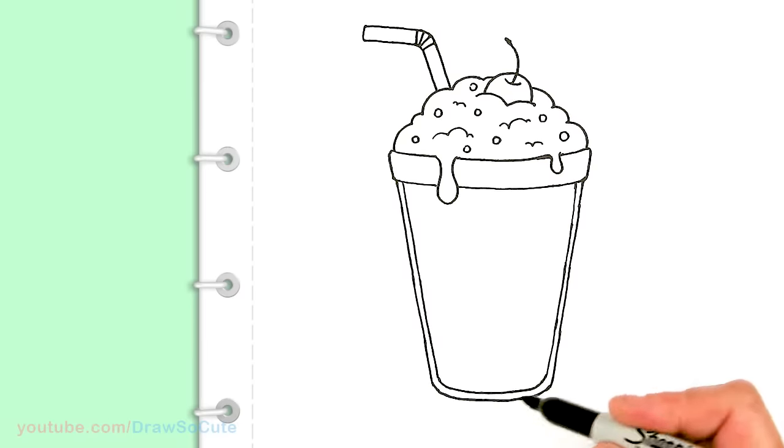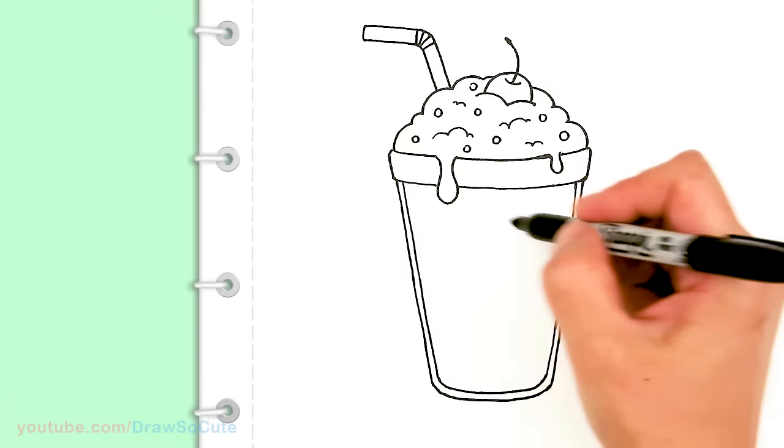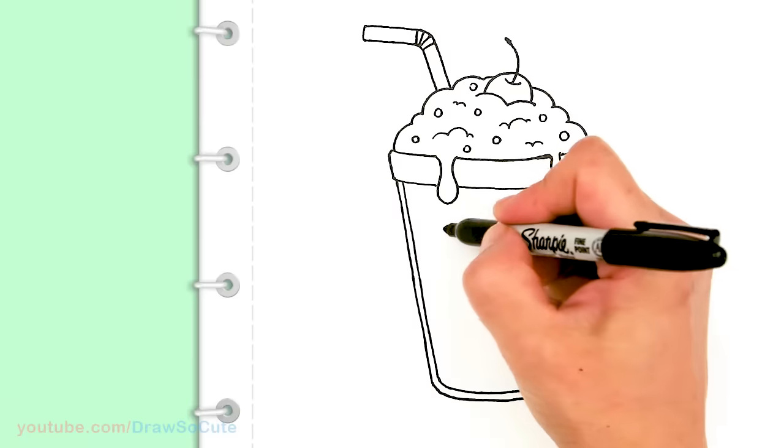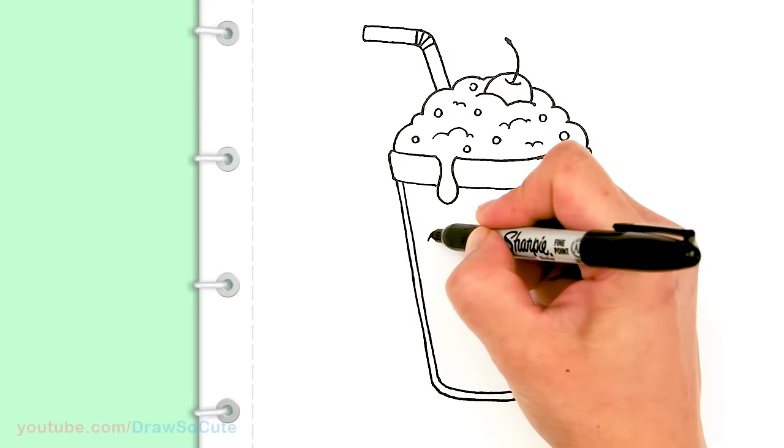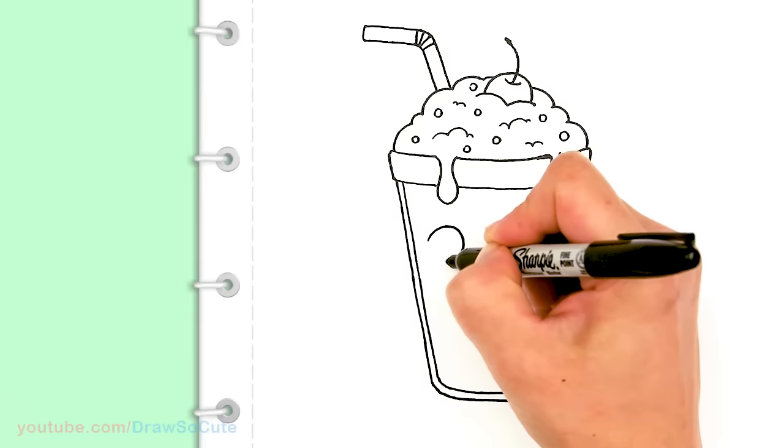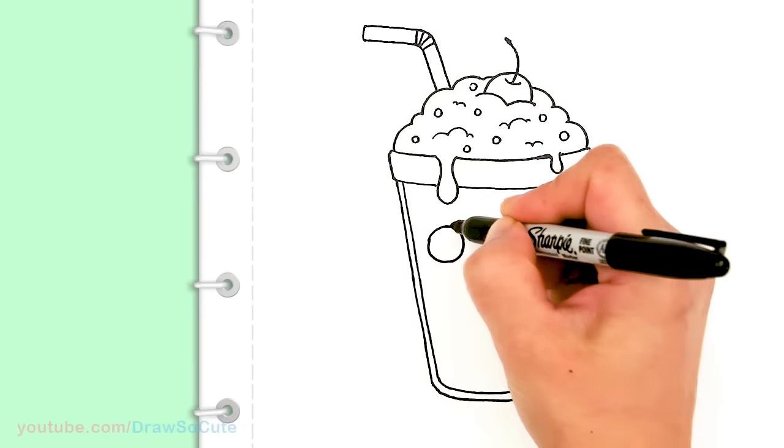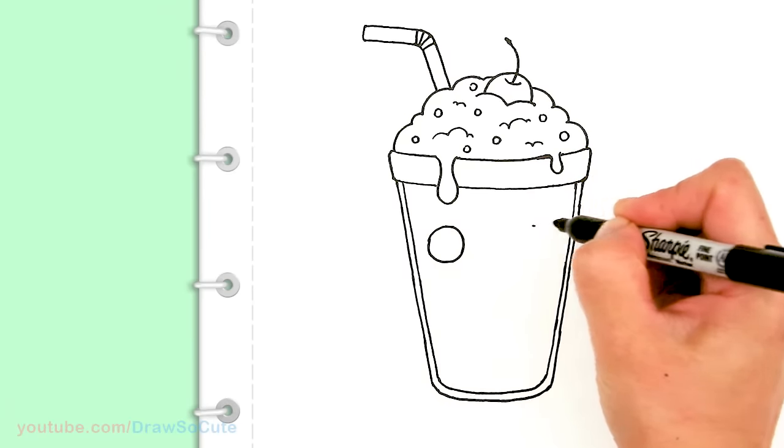Now let's bring this milkshake to life. So if you want you can add some eyes right here. So I'm going to come about right here towards the edge and draw two circles. And same thing on this side.